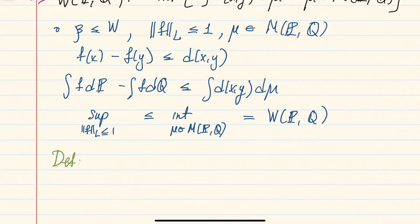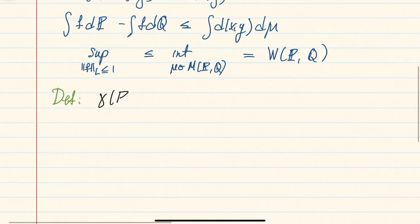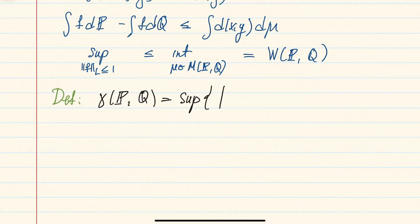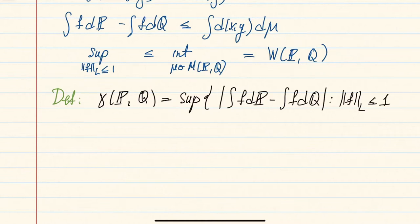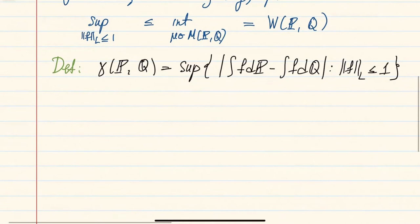We give this new quantity a name: gamma(p, q) is defined as the supremum of |∫f dp − ∫f dq| over all functions f with Lipschitz constant bounded by one. This is very similar to the definition of the bounded Lipschitz metric beta, and clearly beta ≤ gamma.